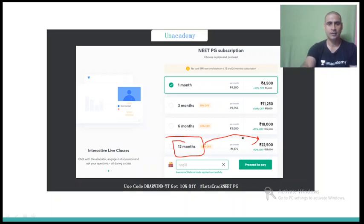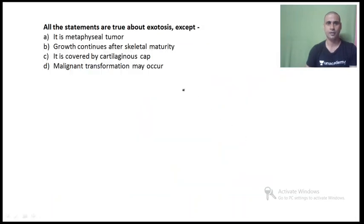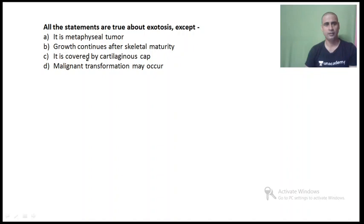Let's start discussing some important MCQs in orthopedics. Today we are going to discuss important MCQs of bone tumors. Here is the first MCQ: All statements are true about exostosis except — it is a metaphyseal tumor; growth continues after skeletal maturity; it is covered by a cartilaginous cap; malignant transformation may occur.